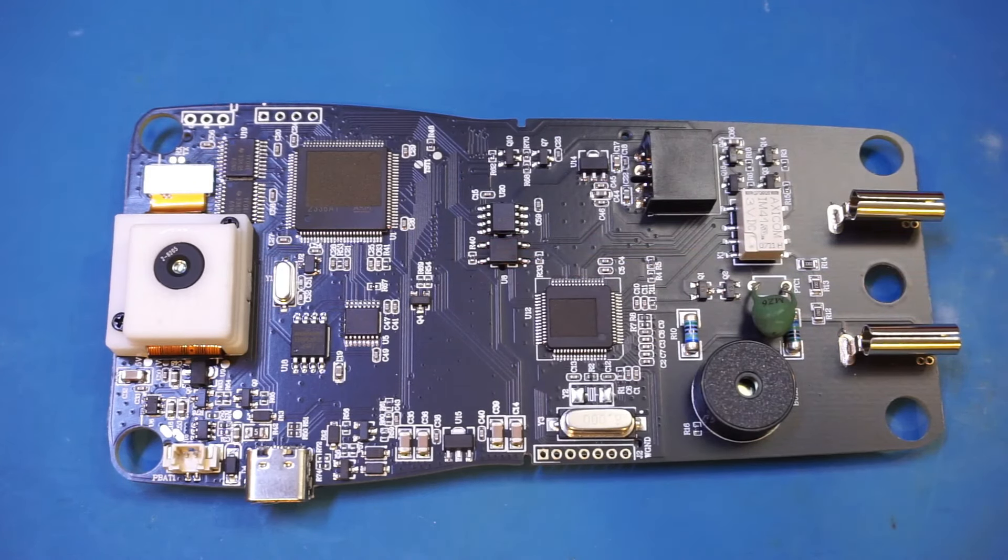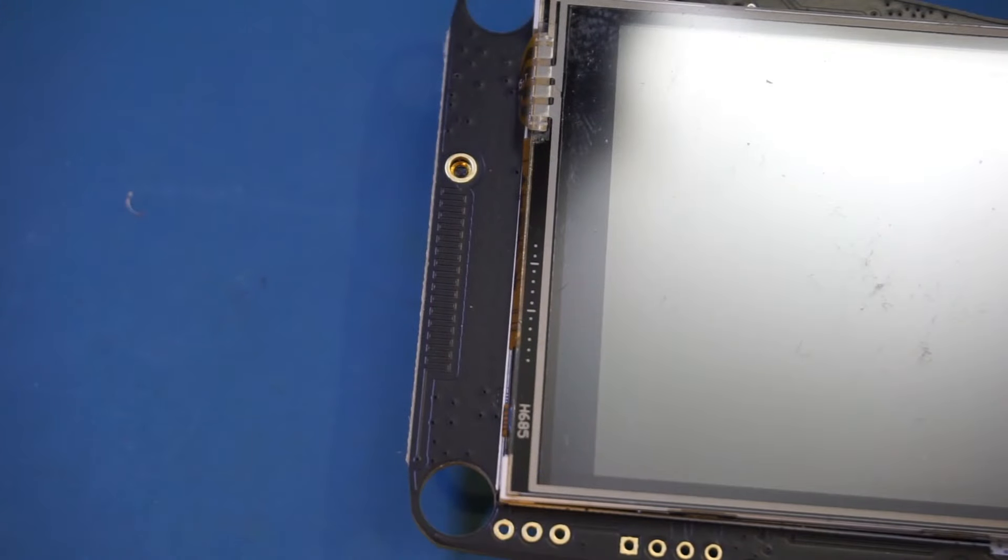And up here we have a EEPROM that is for the digital multimeter and a solid state relay here. The digital multimeter section is actually fairly bare bone, and we only have this single PTC for input protection.